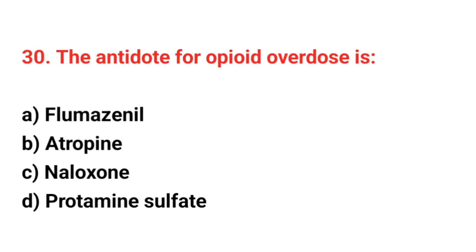Question number 30: The antidote for opiates overdose is? The right answer is option C: Naloxone.